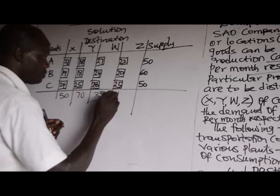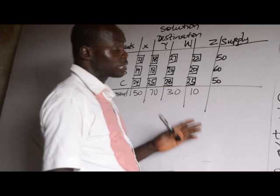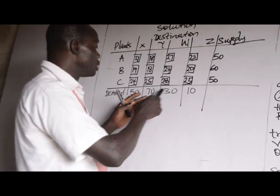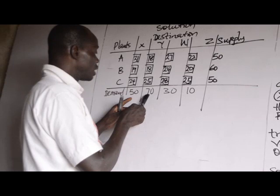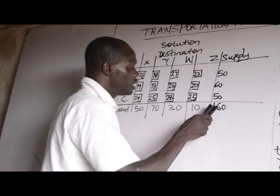The first thing is to check if the problem is a balanced transportation problem — that is, if demand and supply are equal. Total demand: 50 + 70 + 30 + 10 = 160. Total supply: 50 + 60 + 50 = 160. So it is balanced — this is a balanced transportation problem since demand equals supply.